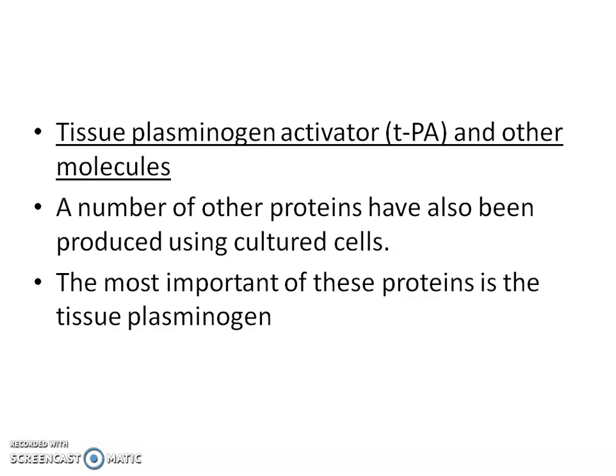Several hormones like erythropoietin and human growth hormone are also produced using cell cultures. A number of antigens used in viral vaccines are produced in cell cultures. Using large-scale cell culture techniques, you can produce vaccines, interferons, antibodies, and tissue plasminogen activator.